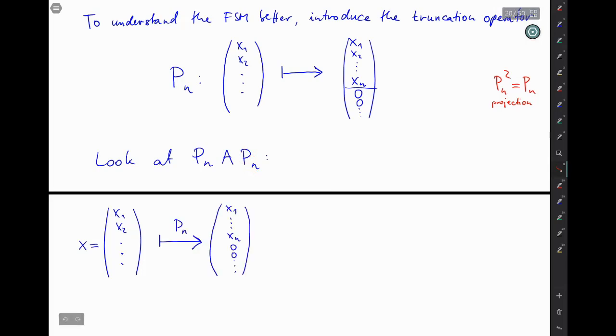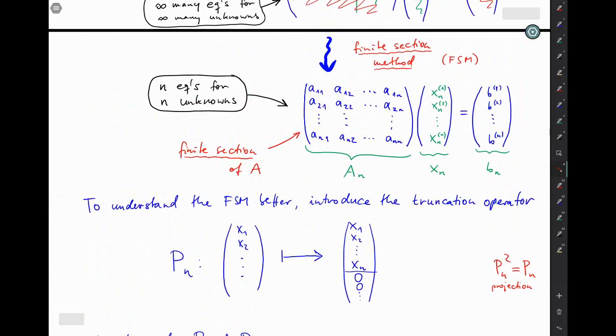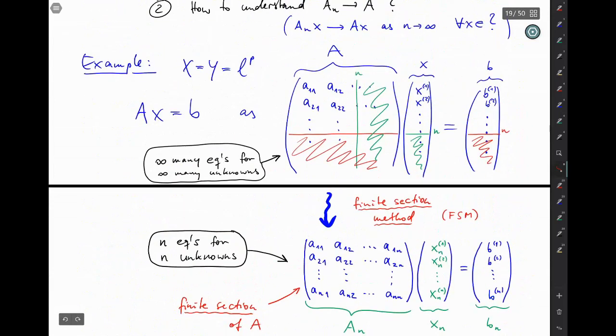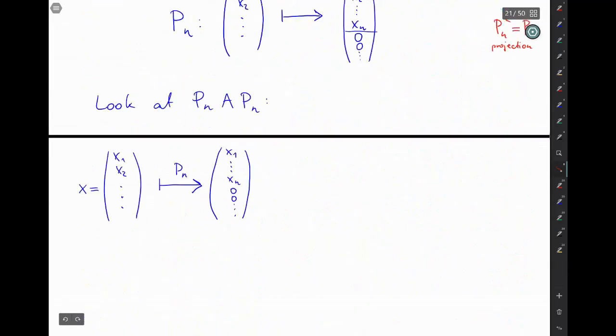Then next apply A. So remember, A is reflected by the infinite matrix up here which multiplies an infinite vector. So this vector has infinitely many possibly non-zero entries, but each of these sums is now finite because our input vector only lives on the first n entries.